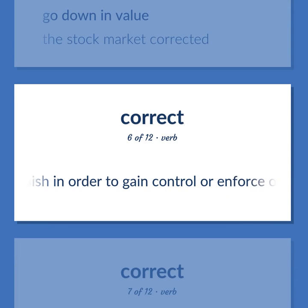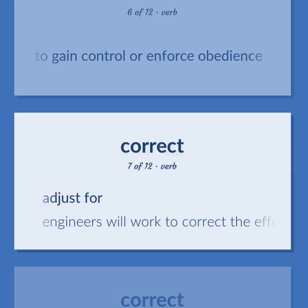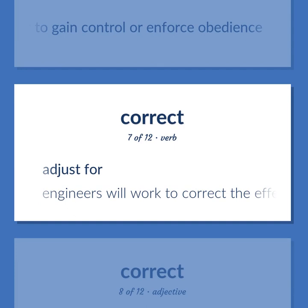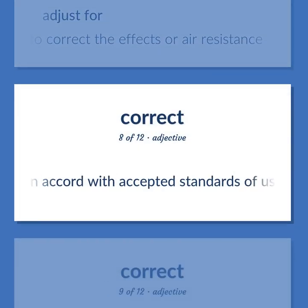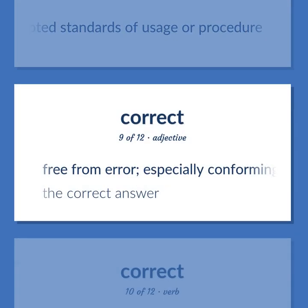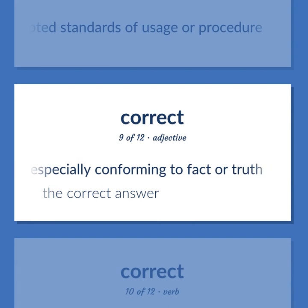Correct also means: punish in order to gain control or enforce obedience; adjust for — engineers will work to correct the effects of air resistance. Also: in accord with accepted standards of usage or procedure; free from error, especially conforming to fact or truth — the correct answer.